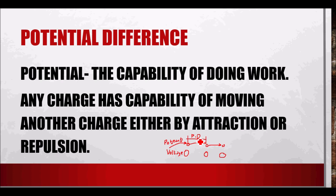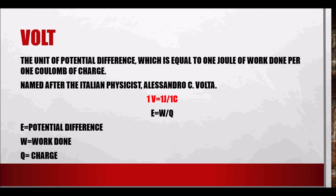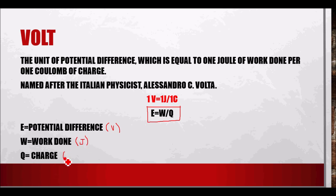Voltage exists in order for electrons to move from one atom to another — if there is no voltage, there will be no movement and therefore no electricity. The unit of potential difference is the volt, equal to one joule of work done per one coulomb of charge, named after Italian physicist Alessandro Volta. The formula is E = W/Q, where E is the potential difference, W is the work done, and Q is the charge.